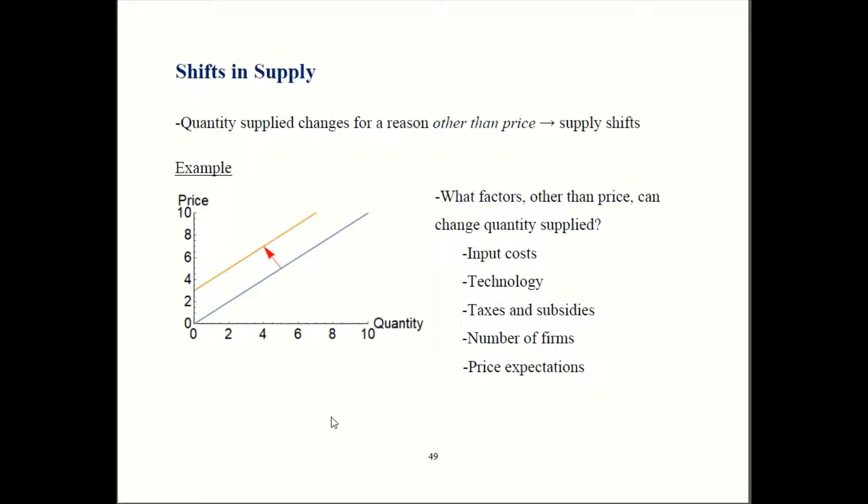So here are things that can shift supply. A change in the input costs can shift supply. So the firm's raw inputs like their raw materials become cheaper or more expensive, that can shift supply. Technology can also shift supply.